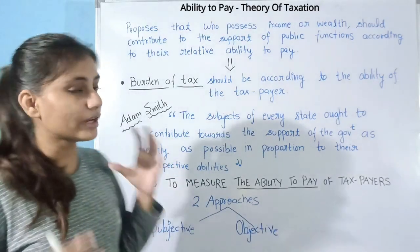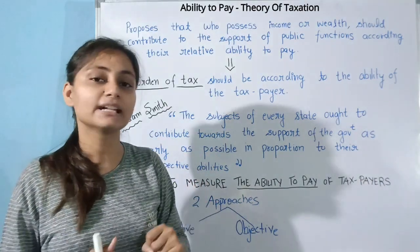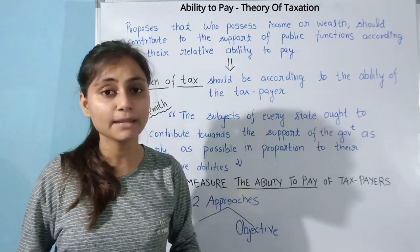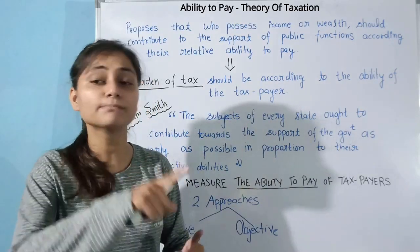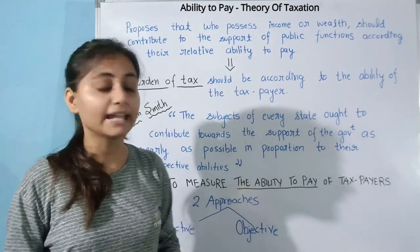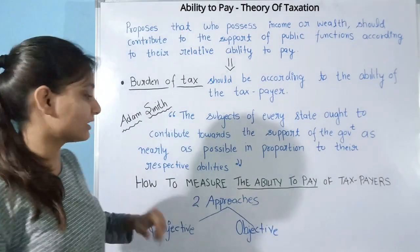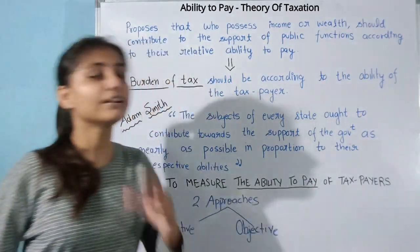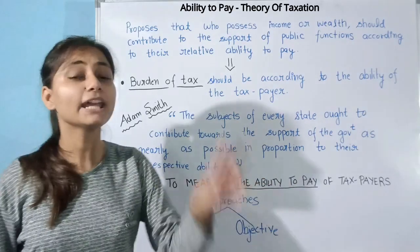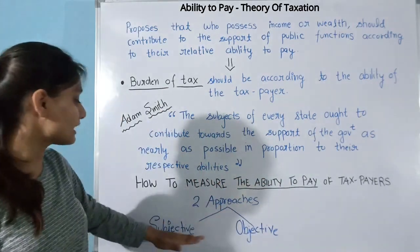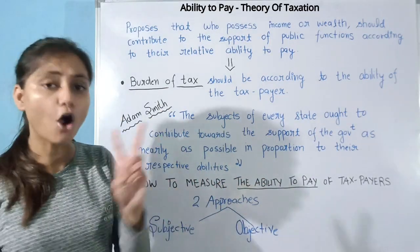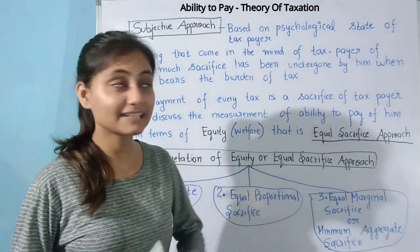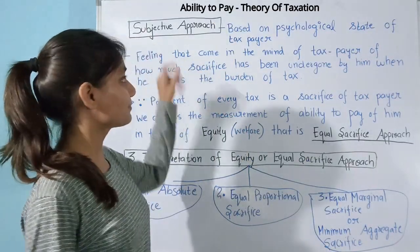A question arises here: how do we measure the ability to pay? How do we know that one person has greater ability to pay compared to another person? So the question is: how to measure the ability to pay of a taxpayer. There are two approaches — one is the subjective approach and the other is the objective approach.